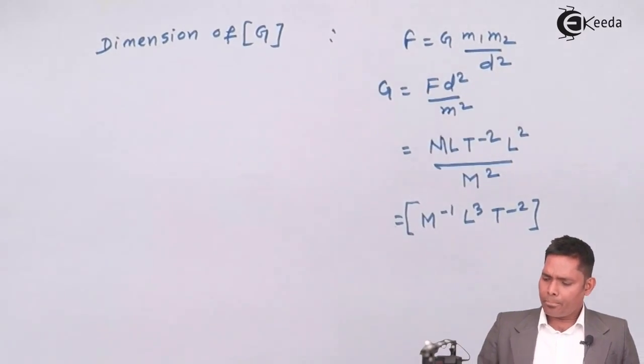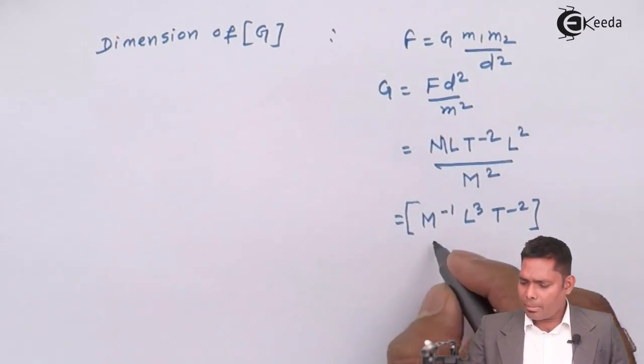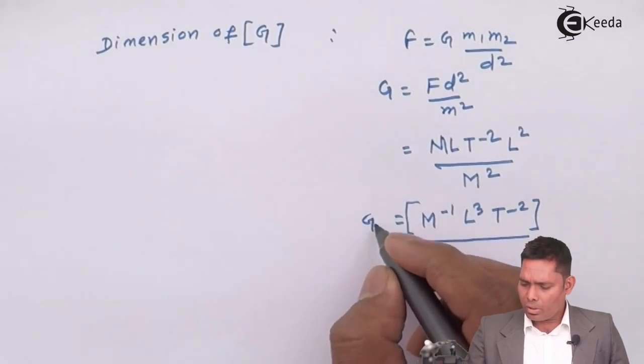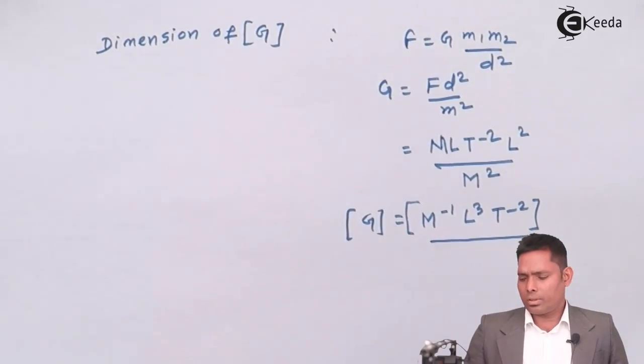This will go up, become minus 1, so L cube T to the power minus 2. OK.